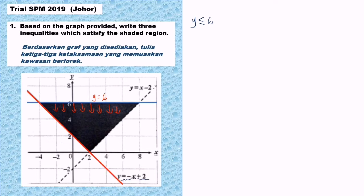For this second straight line, the linear equation is y equals negative x plus 2. We refer to the shaded region — the shaded region is above this straight line, so the inequality is greater or equal. Why 'or equal'? Because the line is a solid line. So we write the second inequality: y greater than or equal to negative x plus 2.